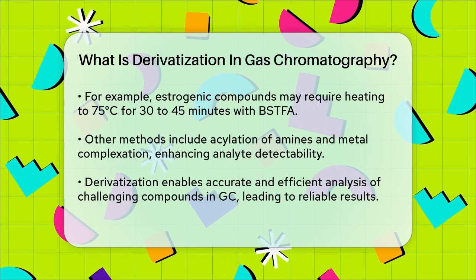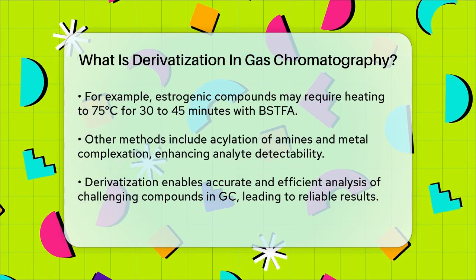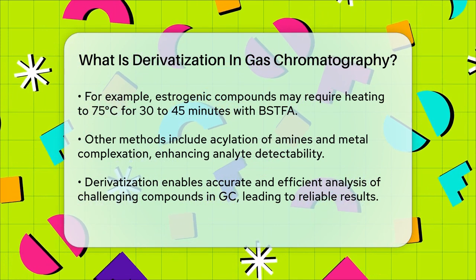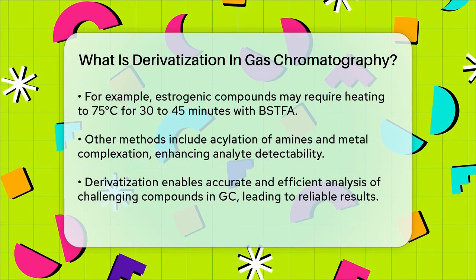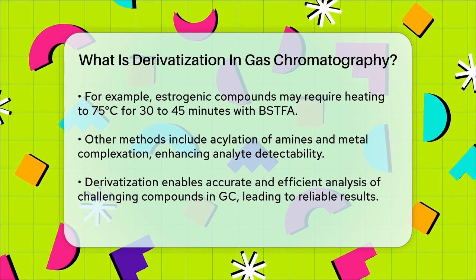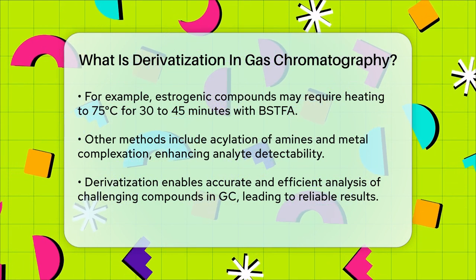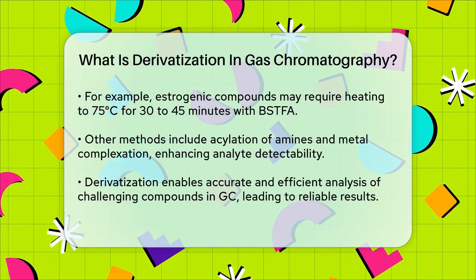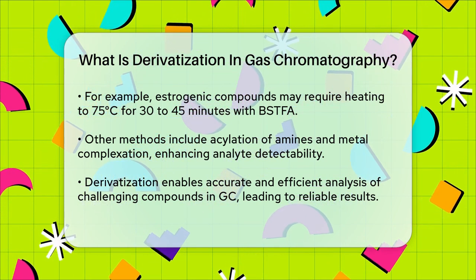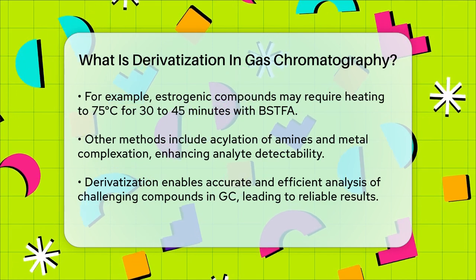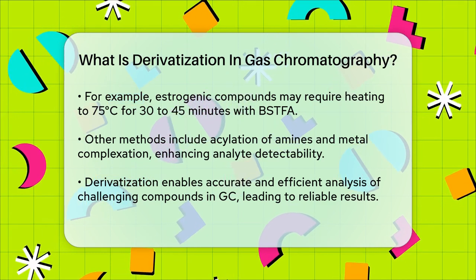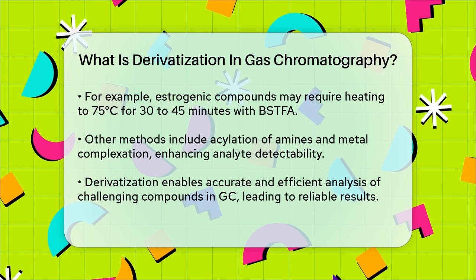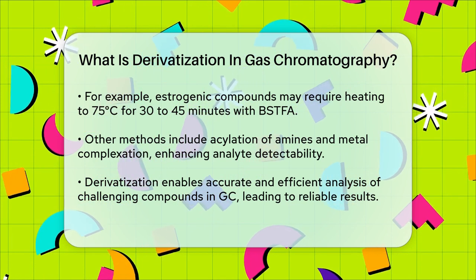In summary, derivatization in gas chromatography is a powerful tool that makes it possible to analyze compounds that would otherwise be difficult or impossible to volatilize. By changing the chemical properties of these compounds, derivatization ensures they can be accurately and efficiently analyzed, providing clear and reliable results.